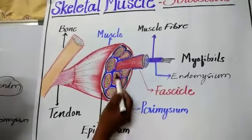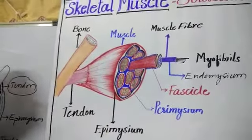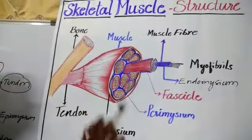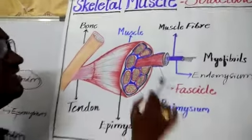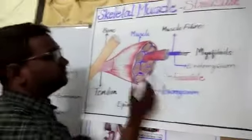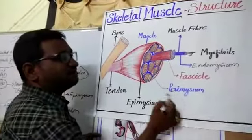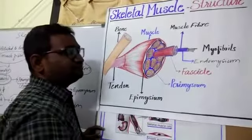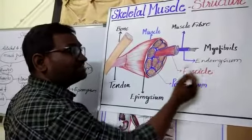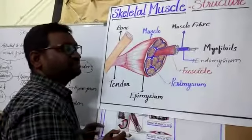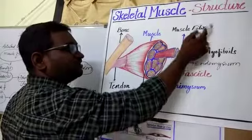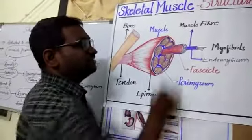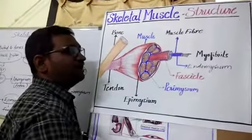Here you can see the bundles of muscle fibers, called fascicles. Each fascicle is covered by a connective tissue sheet called perimysium — that is the outer layer of the fascicle. Within the fascicle, the individual muscle fibers are present, and these muscle fibers are covered by a connective tissue sheet called endomysium.